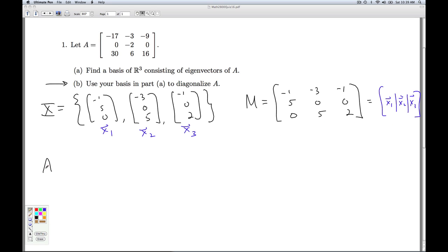So if I take A times the matrix M, I know from block multiplication, I'm going to get A x1, A x2, A x3. In other words, the first column of the product is A times the first column of M, and so on. But A x1 is going to be what? This is an eigenvector corresponding to eigenvalue lambda as negative 2.